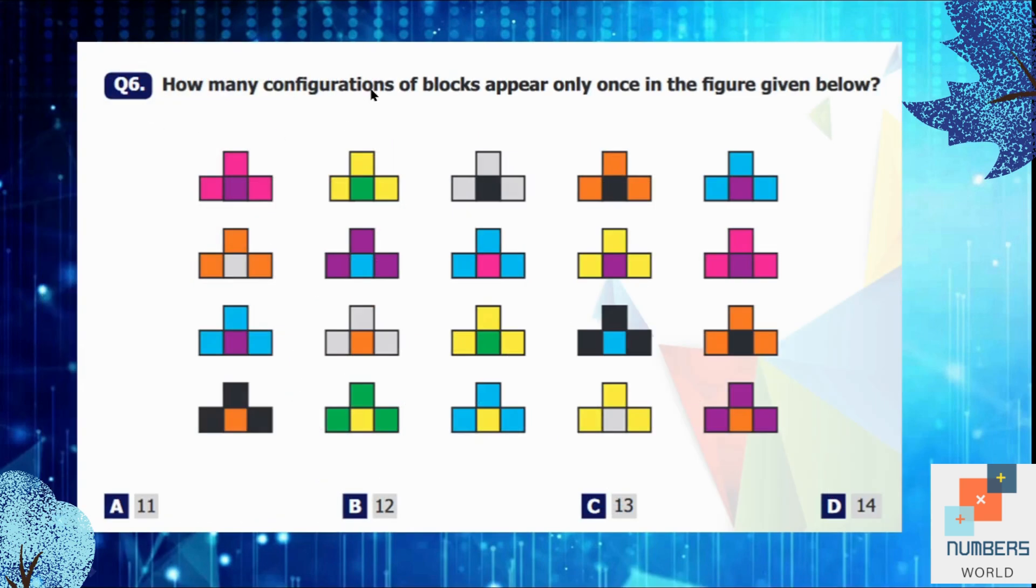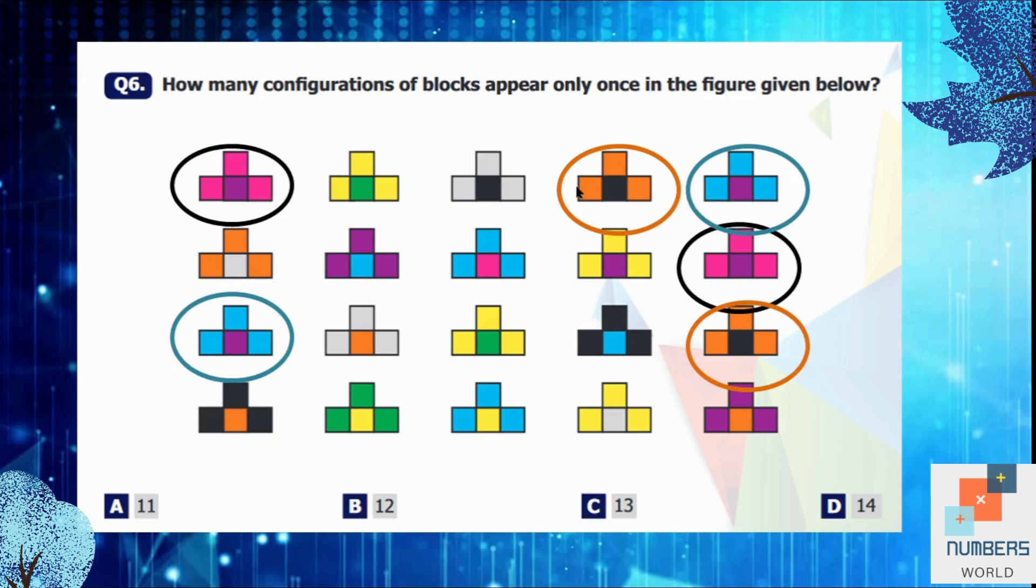Question number 6: How many configurations of blocks appear only once in the figure given below? So basically we are going to match the shapes and then we will count the number of the shapes which are not repeating. So this pink colored shape, it's repeating. Then the orange one as well. I can see this shape two times and this one as well. So I don't think there is any other shape that is repeating itself. So let's count the number of the remaining shapes. 1, 2, 3, 4, 5, 6, 7, 8, 9, 10, 11, and 12. So option B is our answer.